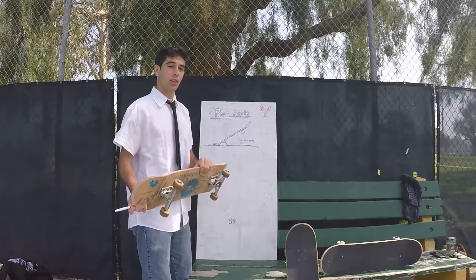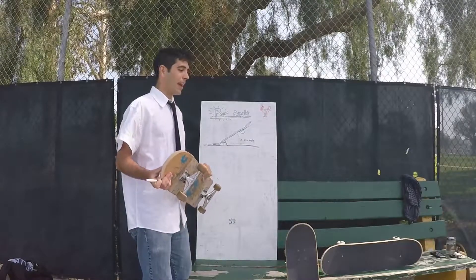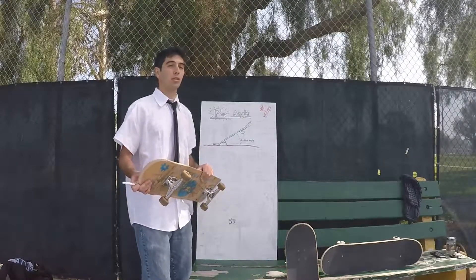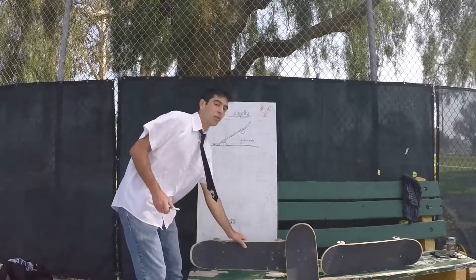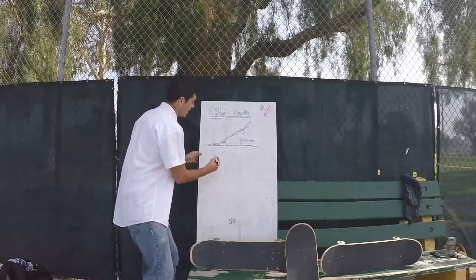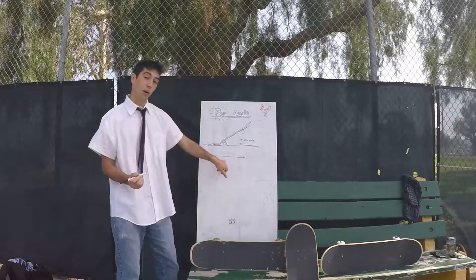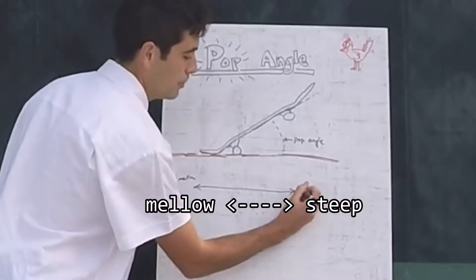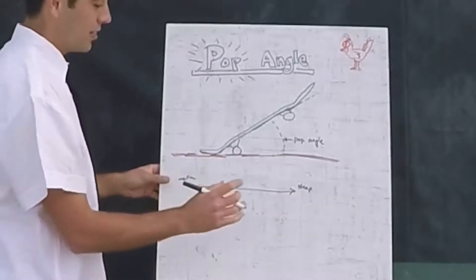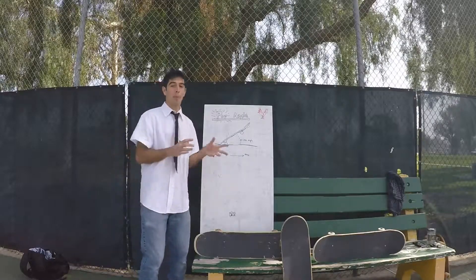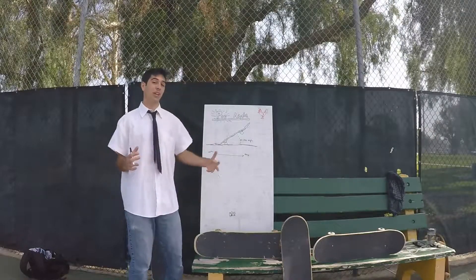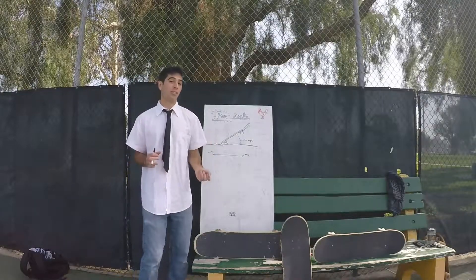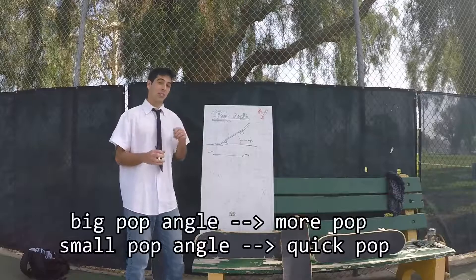Pop angle affects a couple different things to how we skate, and different people prefer different angles — you might like something that's a little bit steeper, you might like something that's a little bit more responsive. Generally, if you have a steeper angle, people will typically say that board has a little bit more pop. It might feel like you're getting more pop, whereas with a mellower angle, you get more of a responsive pop, so you don't have to work as hard to pop it up.